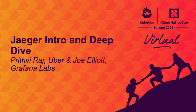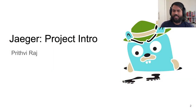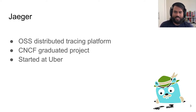I'll be presenting on Jaeger. I'll do a quick project intro and recap on what Jaeger is and what tracing is, and a co-maintainer Joe is going to do a deeper dive into how one might deploy Jaeger using the operator. So what is Jaeger? Jaeger is an open source distributed tracing platform — it's among the most popular ones. Jaeger graduated from CNCF and it was started at Uber around 2015.